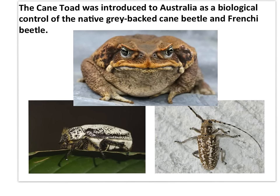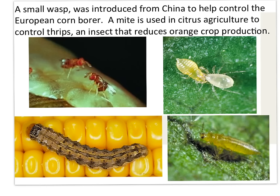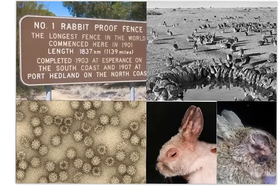The use of a species for biological control may backfire when the alien species becomes invasive. A small wasp was introduced to the U.S. from China to help control the European corn borer. A mite was used in citrus agriculture to control the thrips, an insect that reduces orange crop production. Rabbits, like most other invasive species, were introduced to Australia when the Europeans first settled there — domesticated rabbits for meat and wild rabbits for hunting. Biological control measures had been attempted with rabbits: in 1950, the myxomatosis virus initially wiped out between 95 and 100 percent of rabbits in some areas. However, rabbits recovered with the development of resistance, and remain one of Australia's most formidable invasive species.